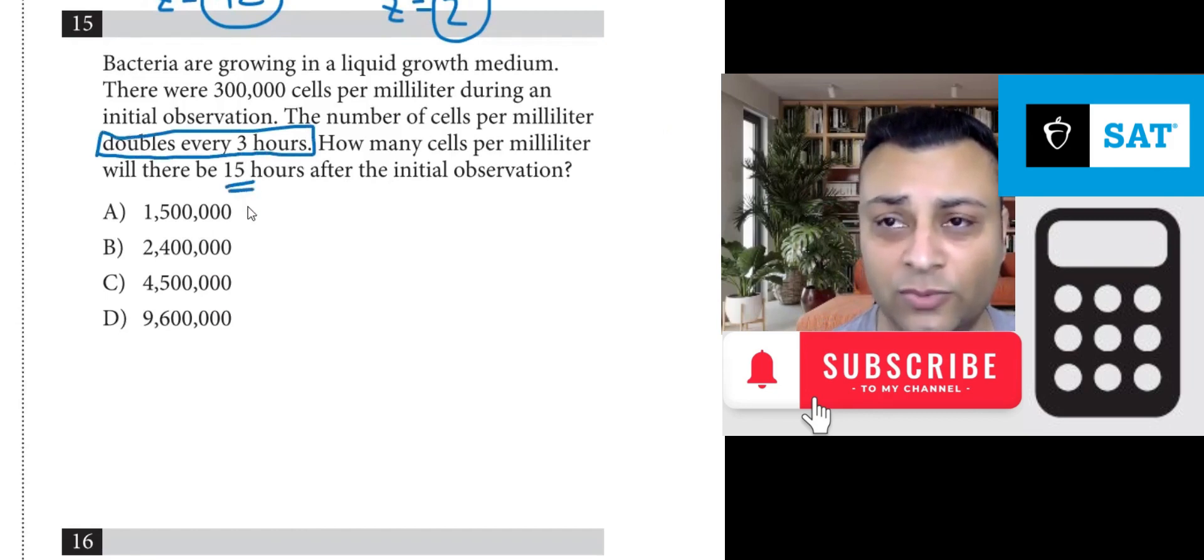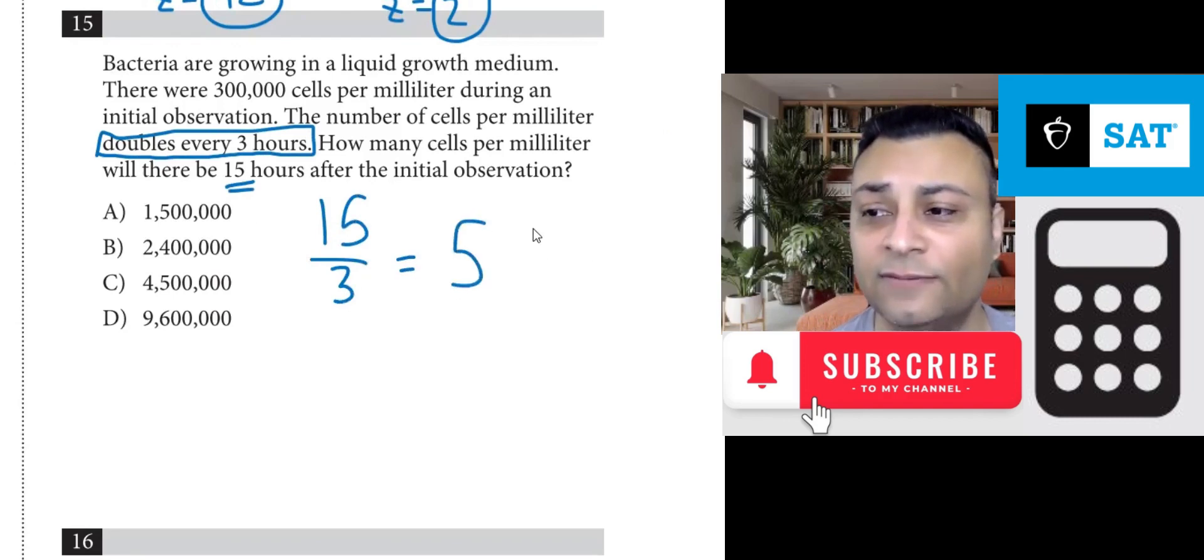Well, we have 15 hours to do. So we do 15 divided by 3 and you get 5. This is 5 rounds of doubling. 5 doubles will take place.